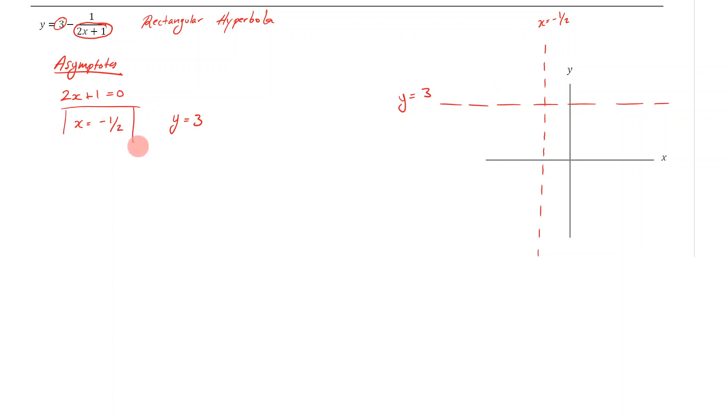remember how these hyperbolas work. The fact that I've got a negative in front means it's been reflected, so it's going to look like this. Remember, your graph should not touch the asymptote; it should look like it's approaching it.